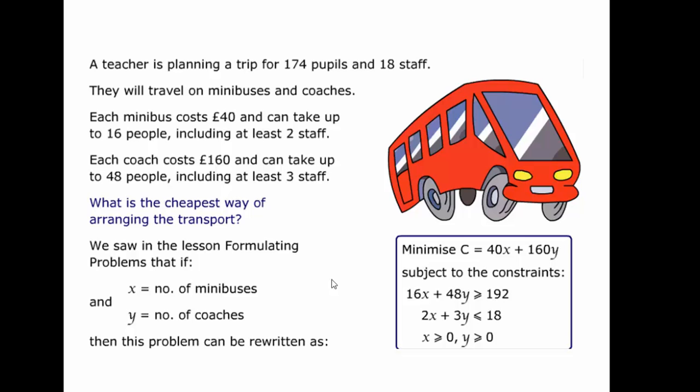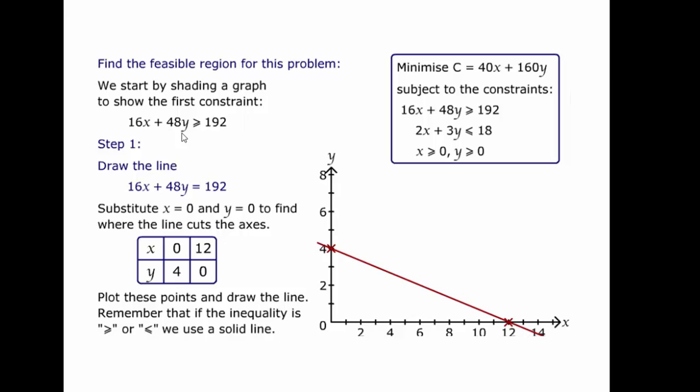We're now going to set this up as a graph. Looking at the first constraint then, we'll draw the line 16x plus 48y equals 192 first. And then from doing that, we'll look at which part above or below the line is greater than or equal to 192. The easiest way to draw these sort of so many x plus so many y equals a constant type of lines is to make x zero to find where on the y-axis we intercept, and to make y zero to see where on the x-axis we intercept.